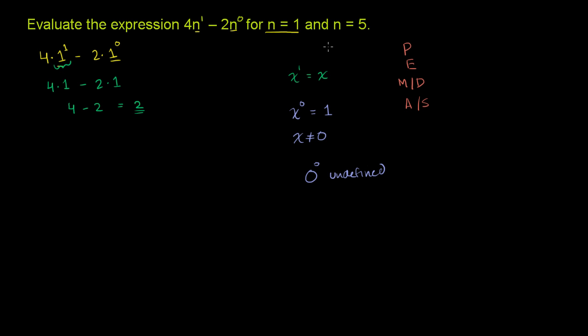Now let's do the same thing with n equals 5. So it becomes 4 times 5 to the first power minus 2 times 5 to the 0th power. Same thing, 5 to the first power is just going to be equal to 5. 5 to the 0th power is just going to be equal to 1.